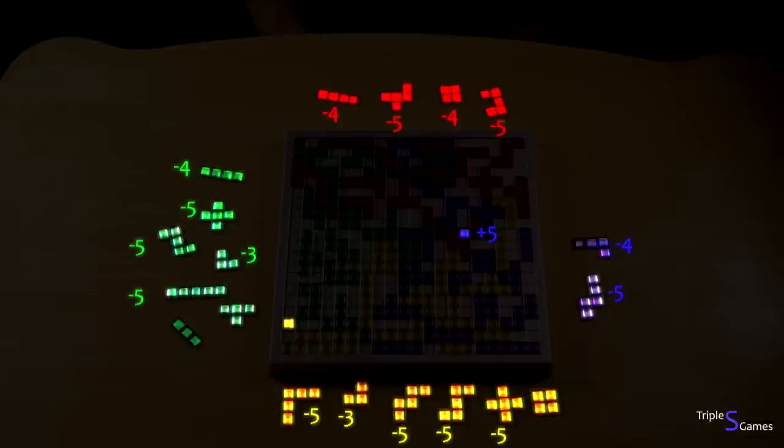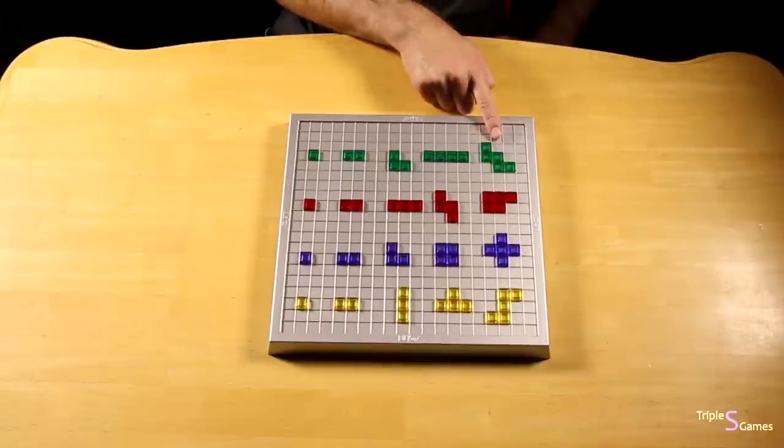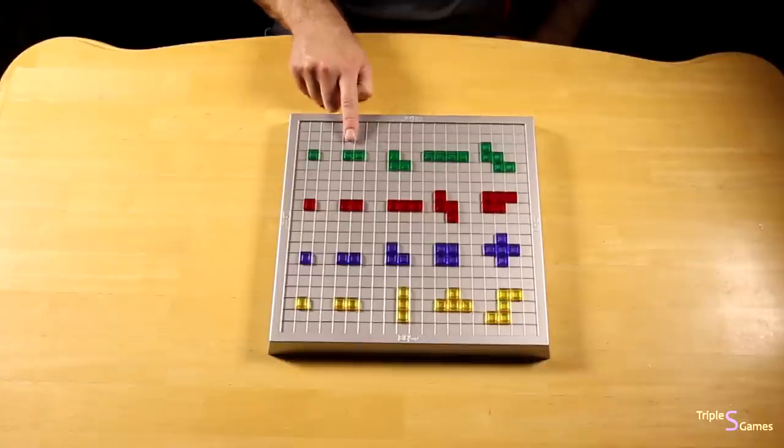For every square part on all your unplayed pieces, you get minus 1 point. For example, this unplayed piece is worth minus 5 points, this is minus 4, this is minus 3, and so on. The player with the most points wins.